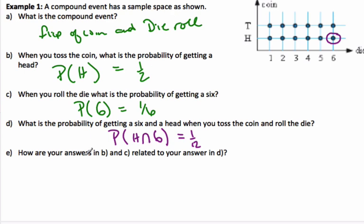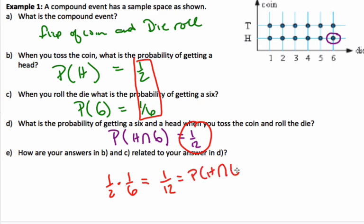Now, if I consider the next question: how do these two probabilities relate to this one? Well, if I look carefully, I know that if I go 1/2 times 1/6, which are the probability of a head and probability of 6, if I multiply those I get 1/12, which is indeed the same as the probability of a head and 6.